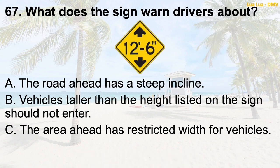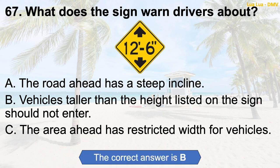Question 67: What does the sign warn drivers about? A. The road ahead has a steep incline. B. Vehicles taller than the height listed on the sign should not enter. C. The area ahead has restricted width for vehicles. The correct answer is B: Vehicles taller than the height listed on the sign should not enter.